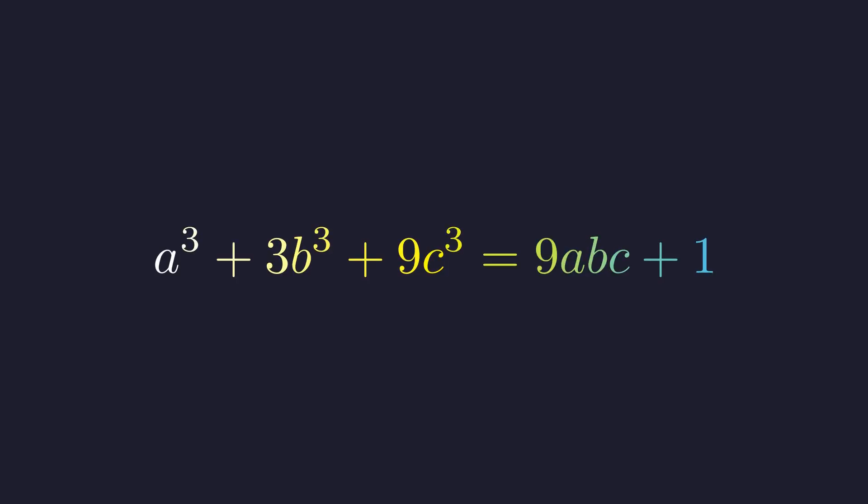We need to find the unique triplet of two-digit positive integers a, b, and c satisfying this equation. The mix of cubic terms makes this look formidable, but its structure is the key to its solution.